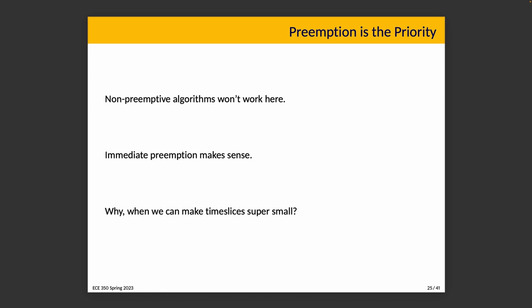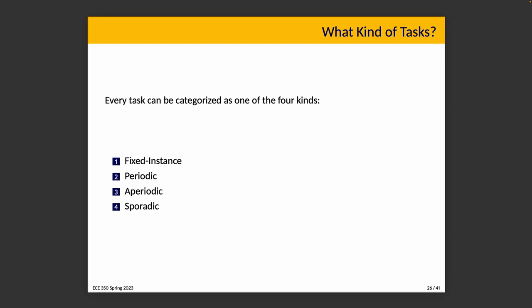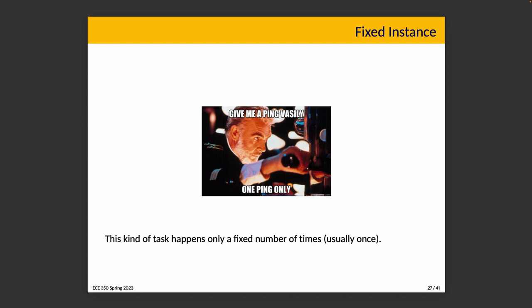There are four kinds of tasks relevant to our discussion: fixed instance, periodic, aperiodic, and sporadic. Fixed instance tasks happen a fixed number of times — usually only once — such as initialization or cleanup. For example, booting up and initializing a database. These are less interesting to our discussion; the relevant analysis is what happens at steady state during runtime, after initialization but before shutdown.